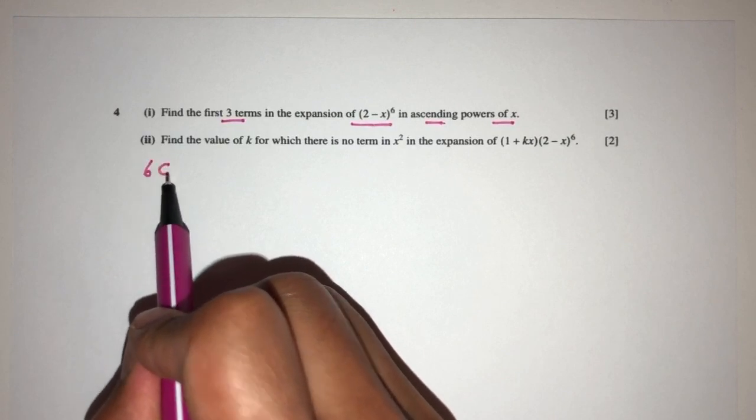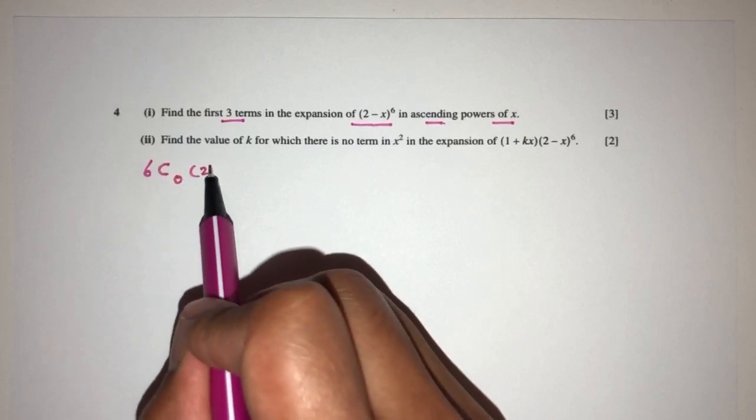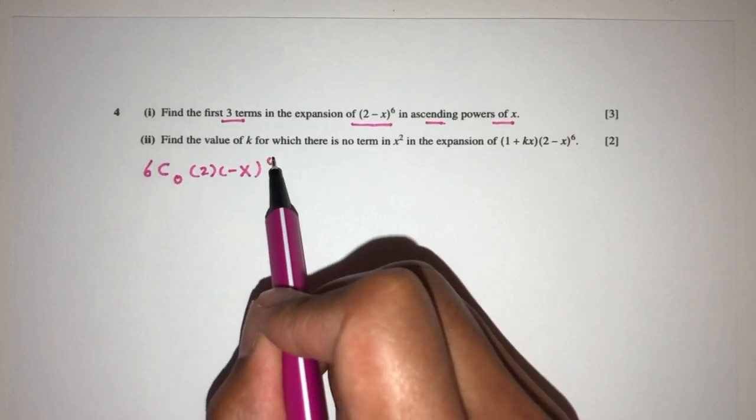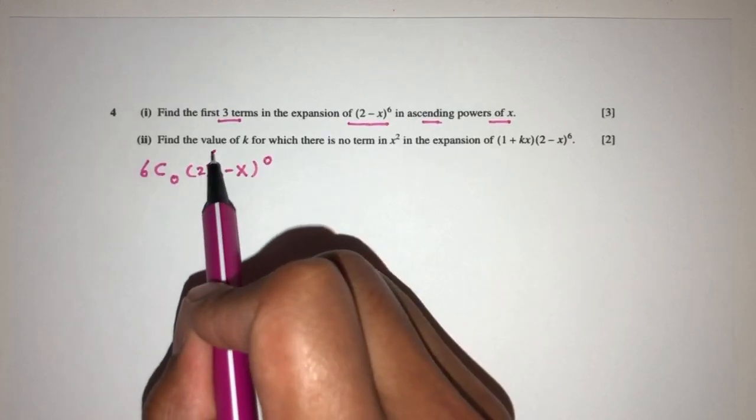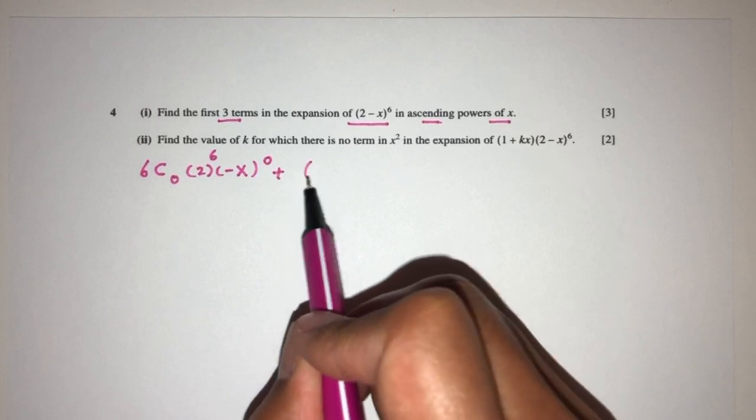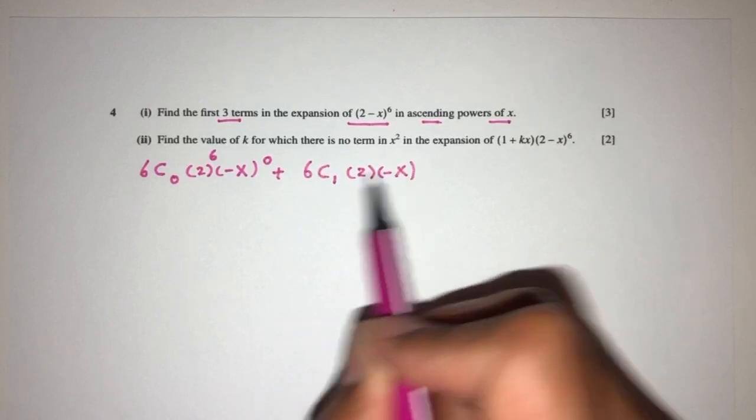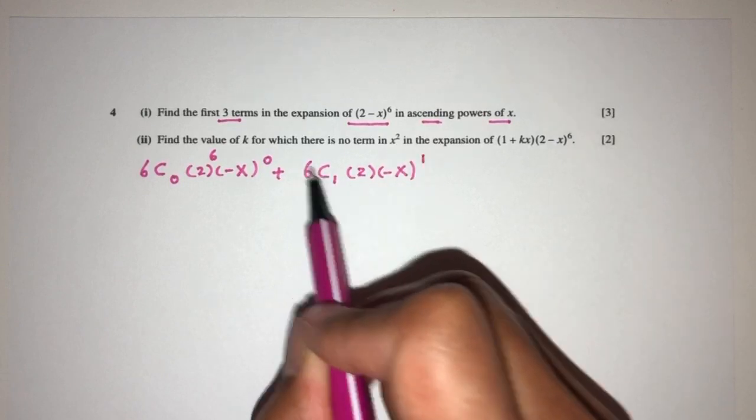That'll be first 6 choose 0. Here we have 2 and then minus x. Since this is 0, this will have to be 0 as well. 6 minus 0 is 6. That's my first term. Then continue, 6 choose 1. That'll be 2 minus x. We have 1 here. That'll have to be 1 here. 6 minus 1 is 5.